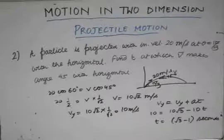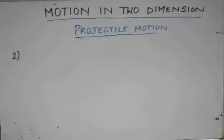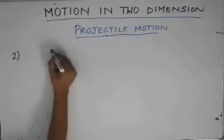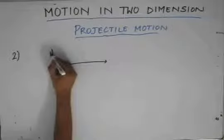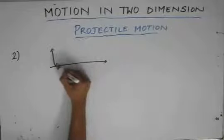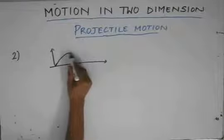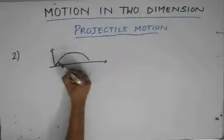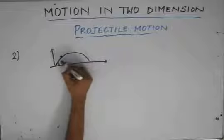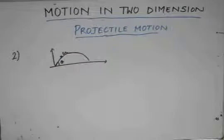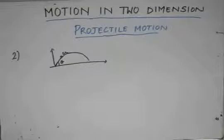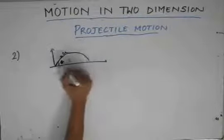We move on to the third problem on projectile motion. In this problem, we have a particle which has been projected with initial velocity u at an angle θ, and we are asked to find the time at which the velocity is perpendicular to the initial velocity.